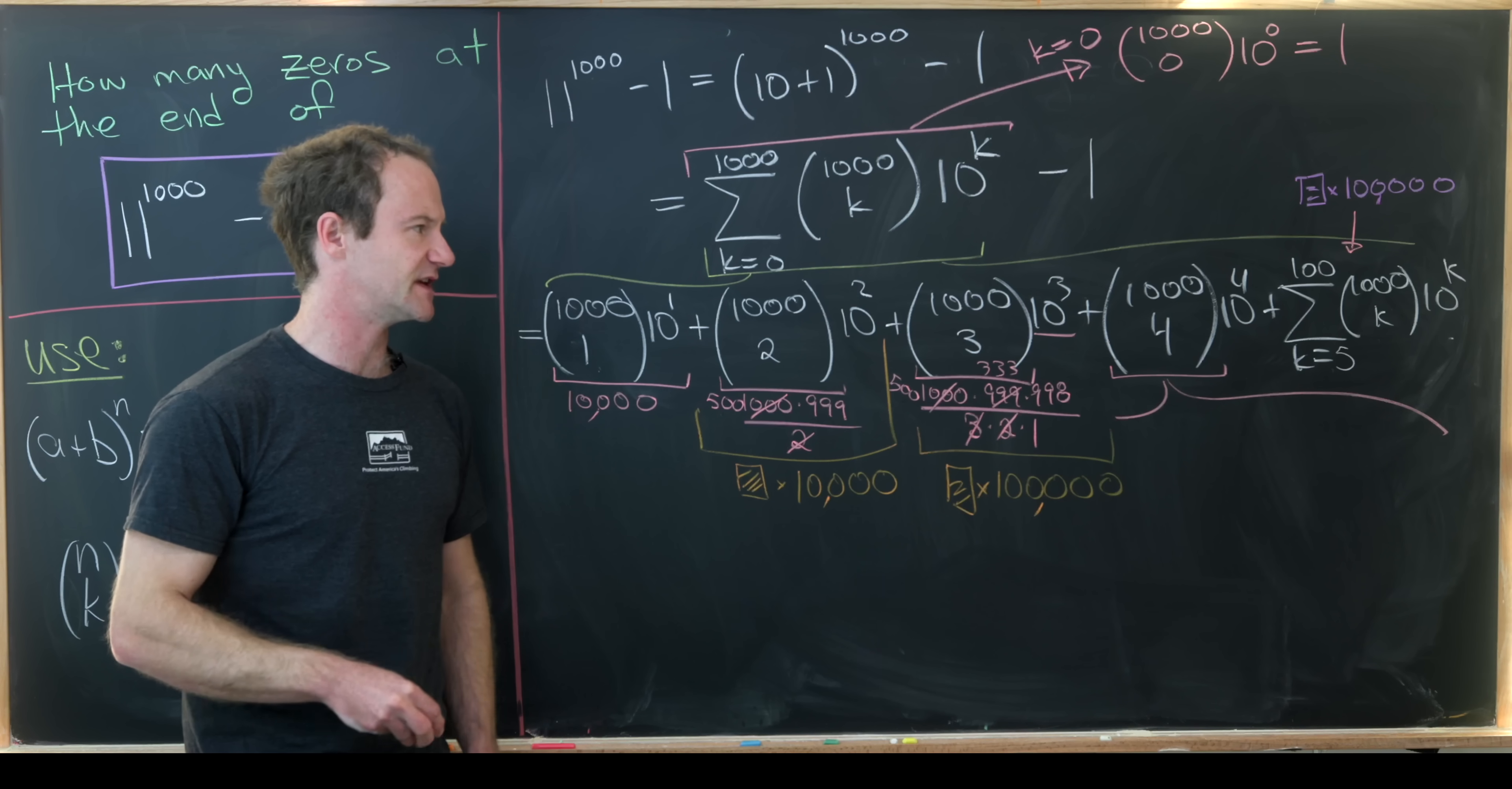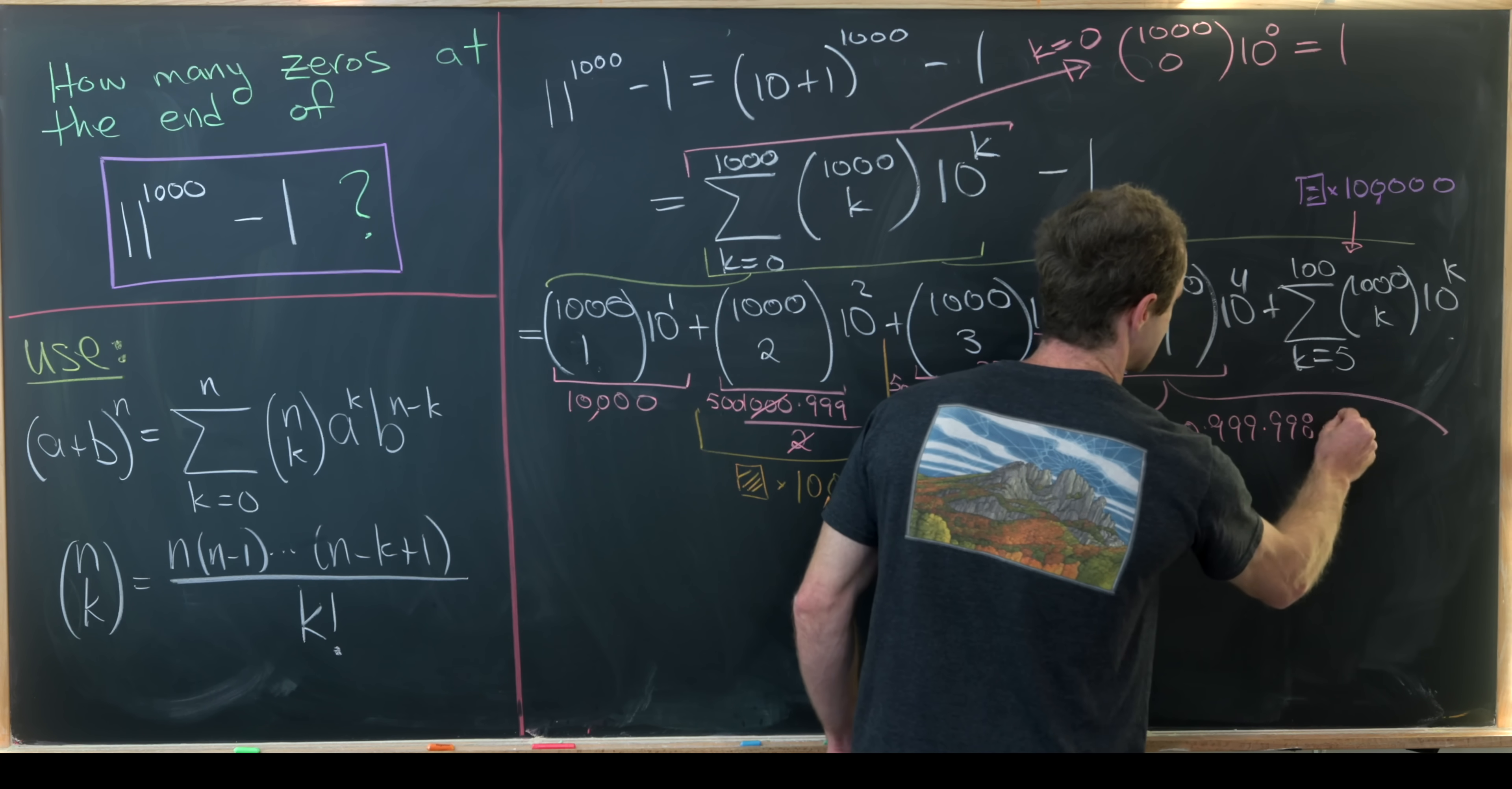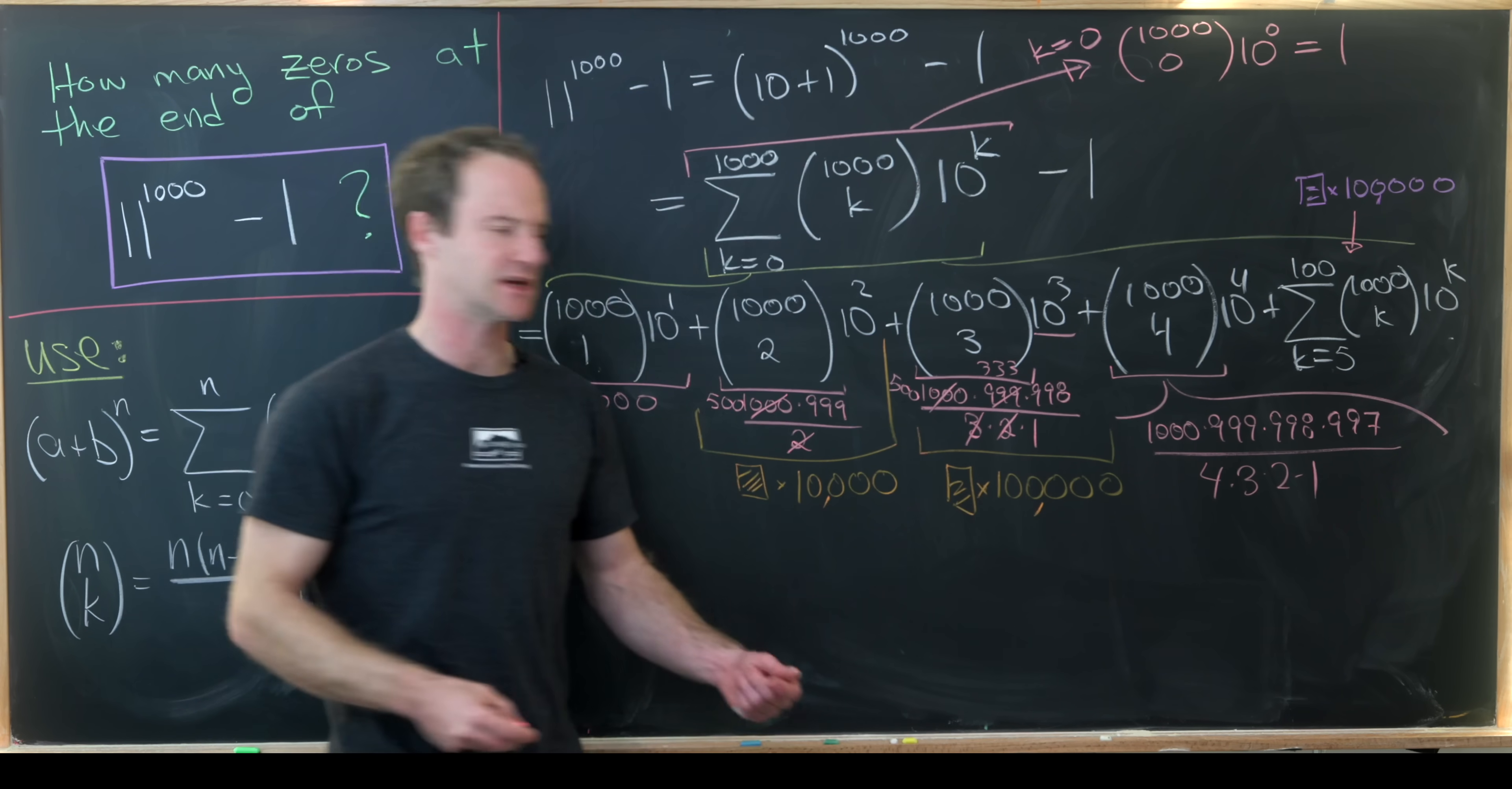Okay so anyway let's look at this 1,000 choose 4 times 10 to the 4. So that's going to give us 1,000 times 999 times 998 times 997 divided by 4 times 3 times 2 times 1.